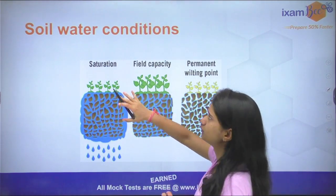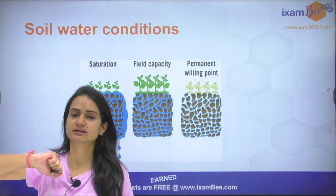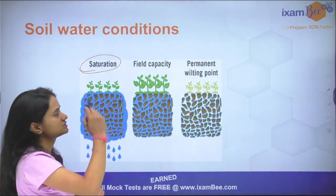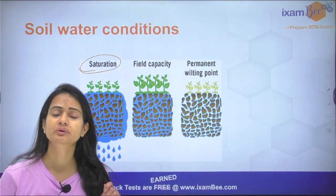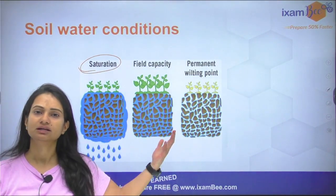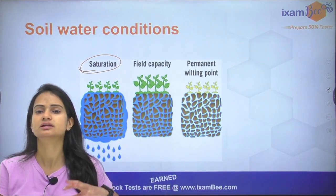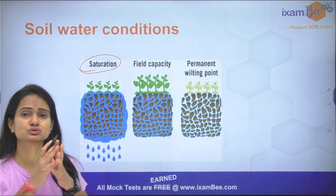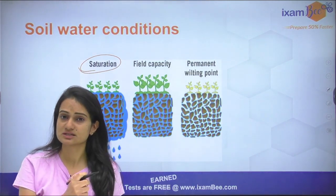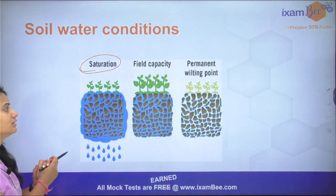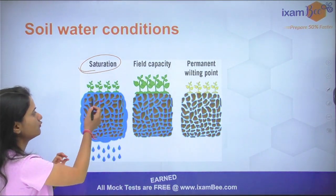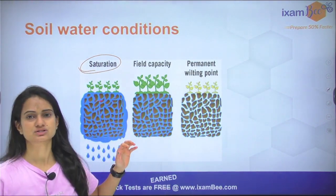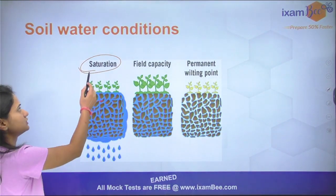Now, coming to different soil water conditions. The first condition is saturation. When we have saturation conditions and there is heavy rain, whatever macropores are present in the soil, everything will fill with water. When all the pores have water, we call it the saturated condition.